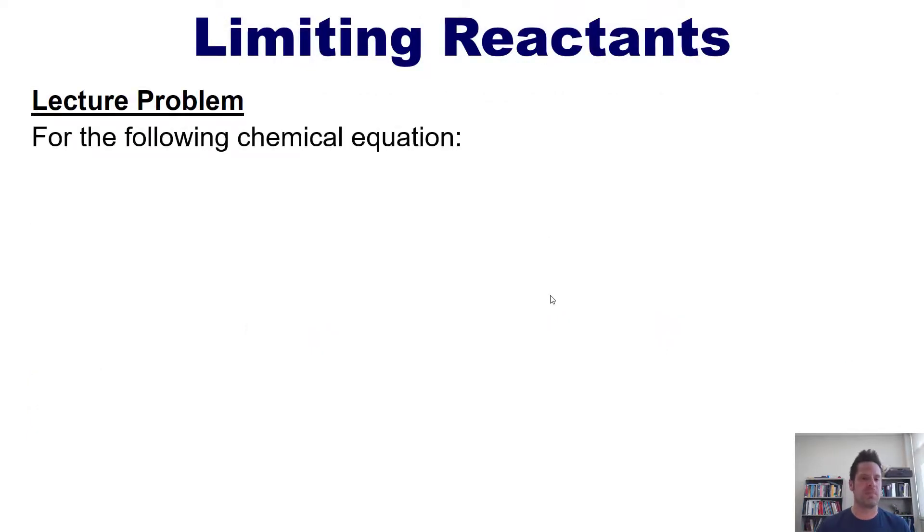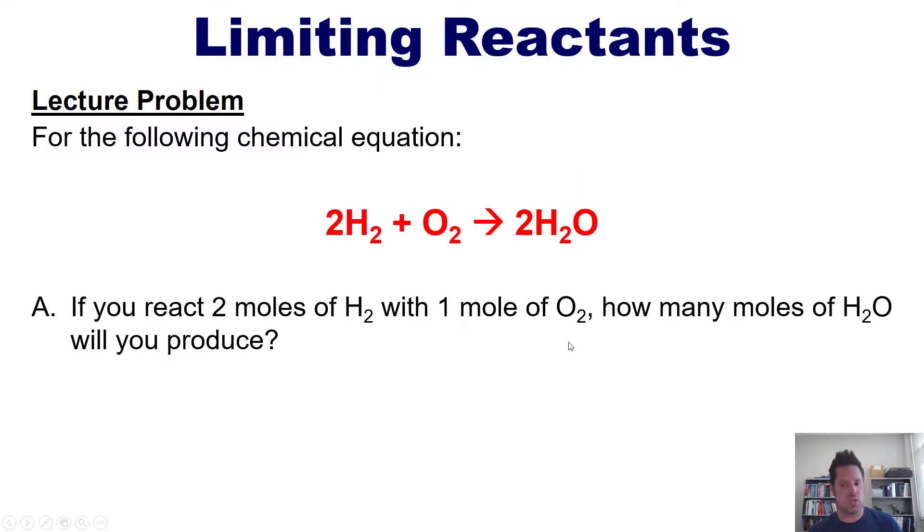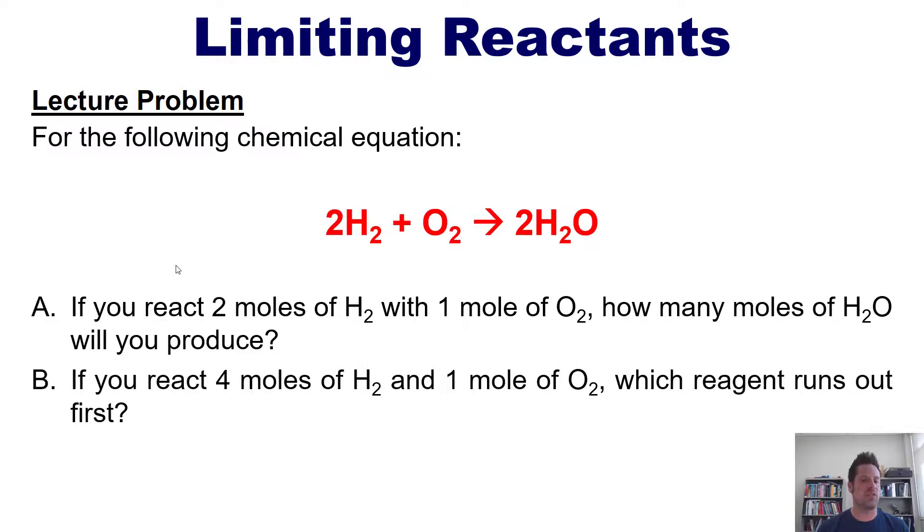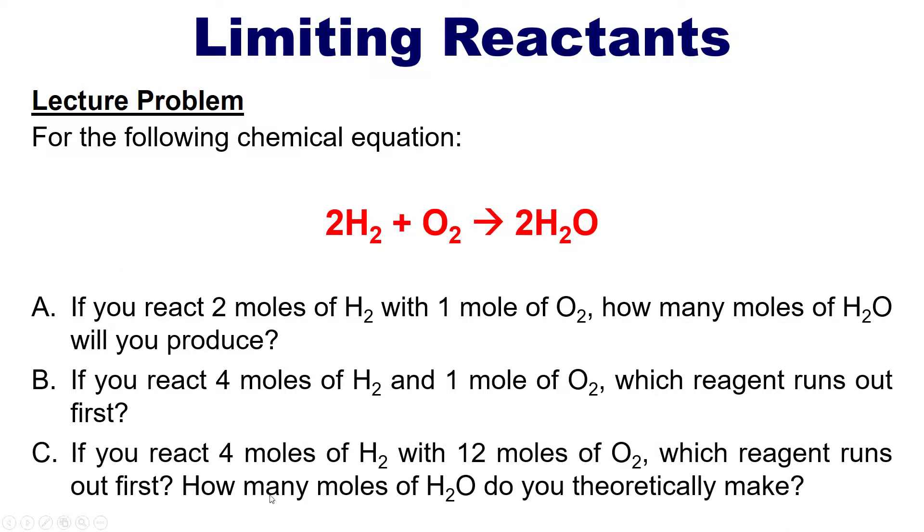Let's take a look then at another problem. For this equation right here, which is balanced: if you react two moles of H2 with one mole of O2, how many moles of H2O would you produce? And separately, if you react four moles of H2 and one mole of O2, which reagent runs out first? And lastly, if you react four moles of H2 with 12 moles of O2, which reagent runs out first and how many moles of H2O would you theoretically make? I invite you to attempt these on your own first, and then if you like, you can watch my answer videos, which are linked to in the description below.